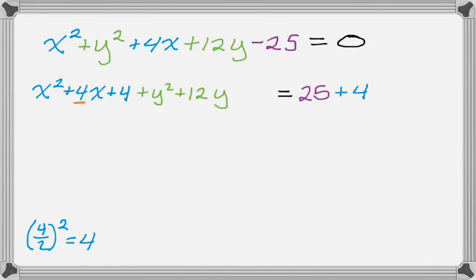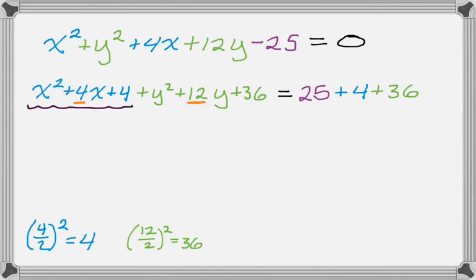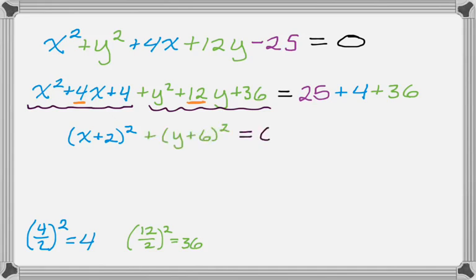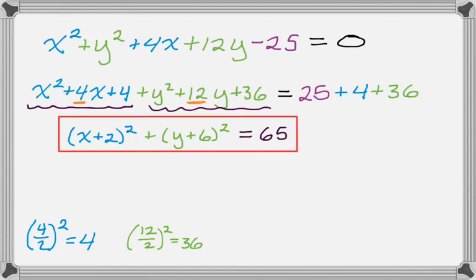Then I repeat this with y. The coefficient of y squared is 1, so I jump right in. The coefficient of y is 12, so I take 12, divide by 2, square it — that gives me 36. I add that to both sides. So now x squared plus 4x plus 4 is a perfect square trinomial, giving me (x + 2) squared, plus (y + 6) squared, and then just add those constants up on the right and you're done.